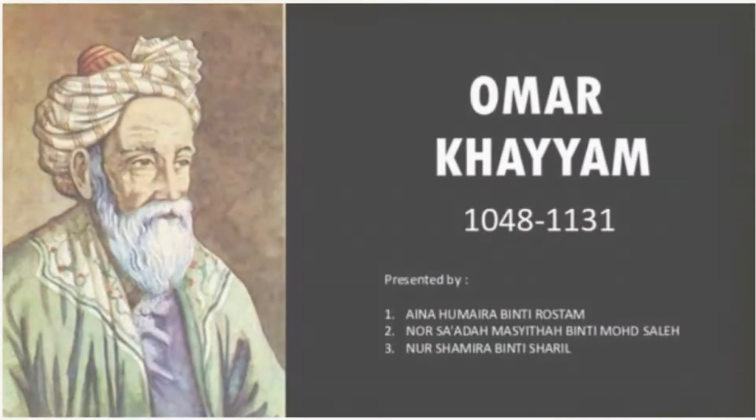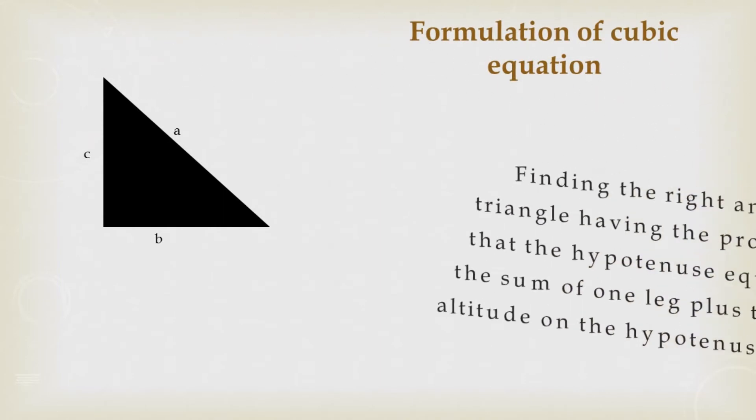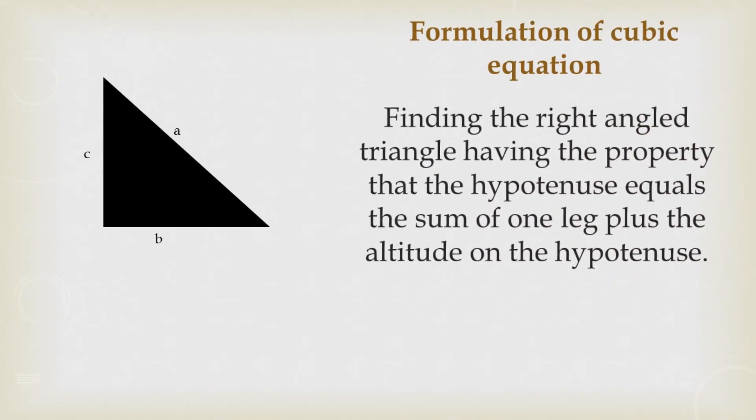Another explanation made by Omar Khayyam in solving this cubic equation is the usage of a right angle triangle labeled A, B, C. The hypotenuse is A. The two other sides are labeled B and C.